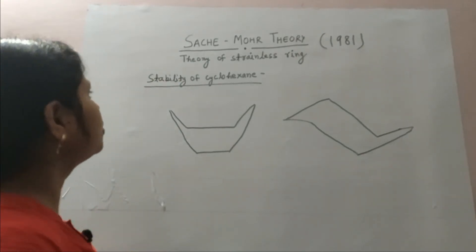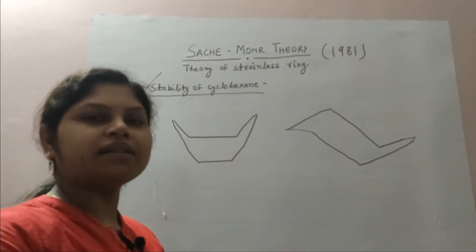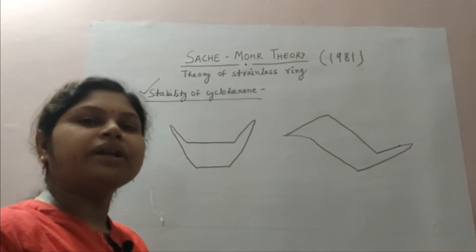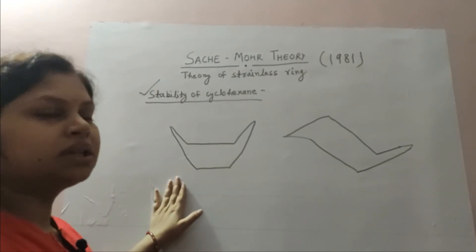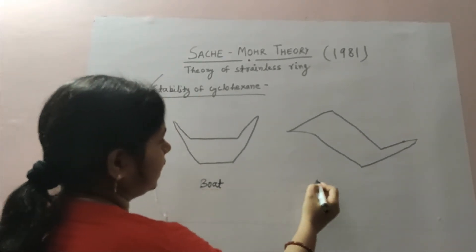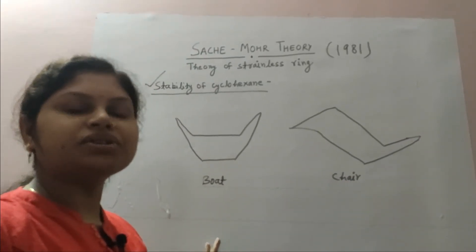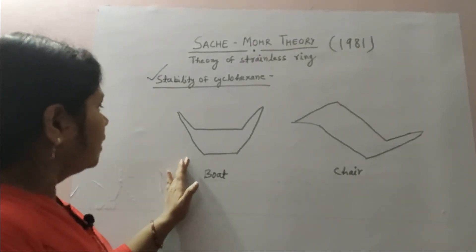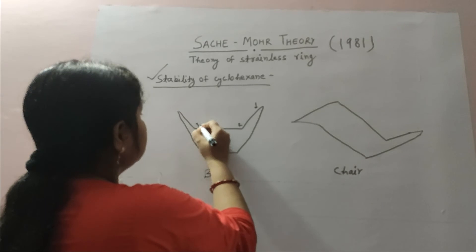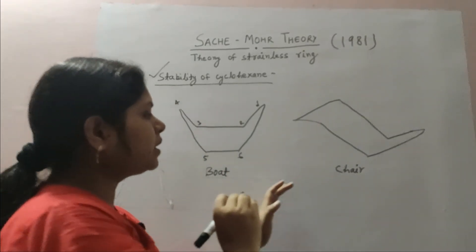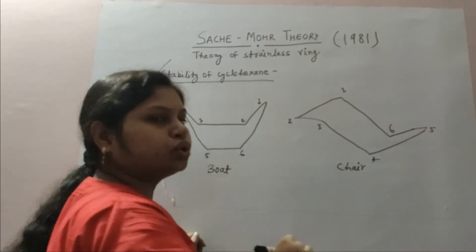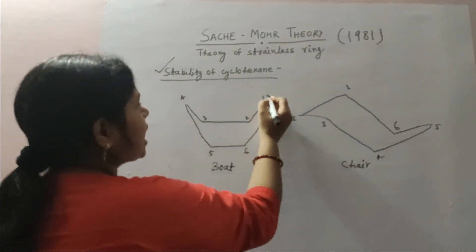Now coming to the stability of cyclohexanes. The stability of cyclohexane is well explained by Sachse-Mohr theory. They said that all the carbons in the ring should not lie in the same plane. For example, these are the chair and boat forms of cyclohexane. In the boat form, the carbons are numbered one, two, three, four, five, and six. Both of these structures are of cyclohexane, and each carbon contains two hydrogens.